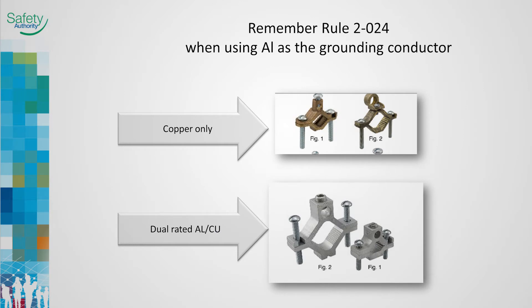Rule 10-814, bonding conductor size, has been edited to recognize that larger installations use solid bus bar applications as the system conductors. Table 16 has been revised and separated into two tables, 16A and 16B. Table 16A is used when the installation consists of wire and cables. Table 16B is used for bus bar installations.